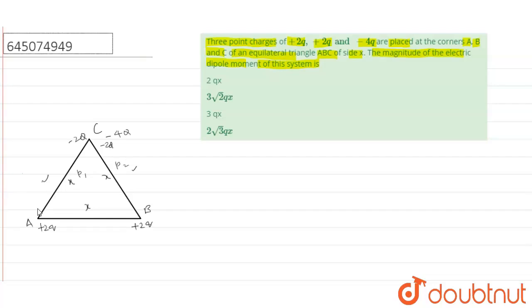Dipole moment is a directional quantity and its direction is from negative to positive. So let us say this is p1. So p1 will be equal to 2q into x that is 2qx and p2 will also be 2q into x.